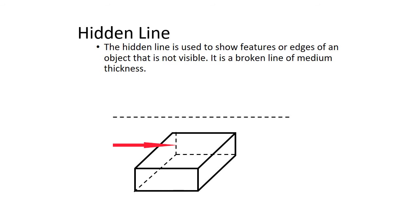This is a hidden line. These are the lines that we can't see from the view we're looking at. The hidden line is used to show features or edges of an object that is not visible. It is a broken line of medium thickness.